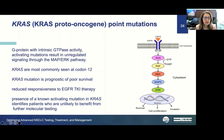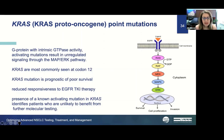KRAS is a point mutation—a G protein with intrinsic GTPase activity. Activating mutations result in unregulated signaling through the MAP-ERK pathway, most commonly at codon 12, and are associated with poor survival. KRAS mutations show prognostic significance in NSCLC and are associated with reduced responsiveness to EGFR TKI therapy. Presence of a non-activating KRAS mutation identifies patients unlikely to benefit from further molecular testing.